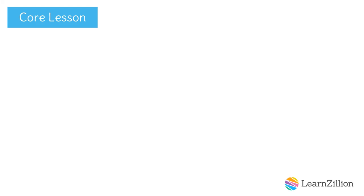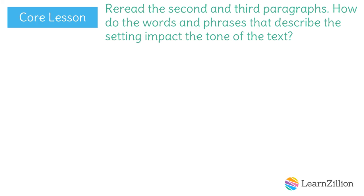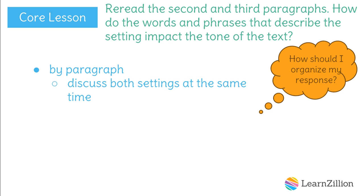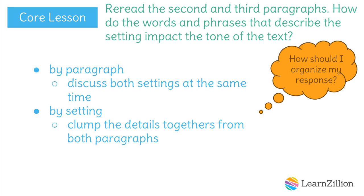Now I've done some good thinking about this part of the text. The last thing I want to do is review the original question: Reread the second and third paragraphs. How do the words and phrases that describe the setting impact the tone of the text? I have two options for organizing my response. I could organize it by paragraph — addressing both settings and their tones from one paragraph and then moving on to the next. Or I could organize it by setting, clumping all the details about one setting first and talking about the tone, then moving on to the next setting. For clarity, I think it is going to be better for me to organize my response by the setting.